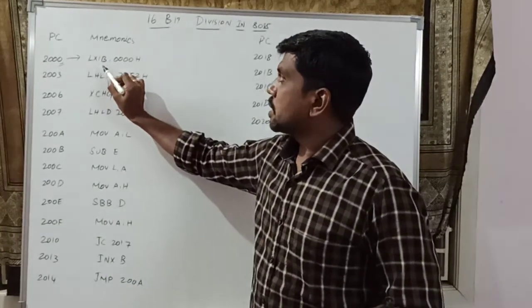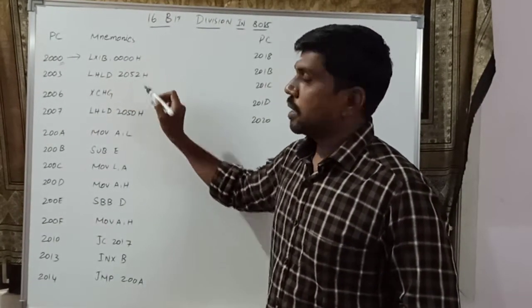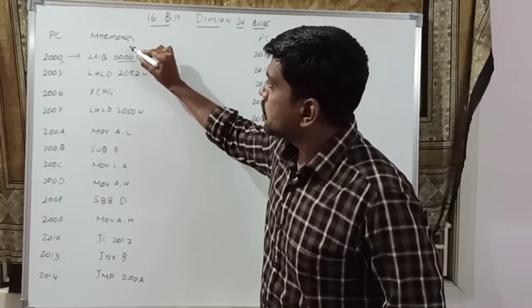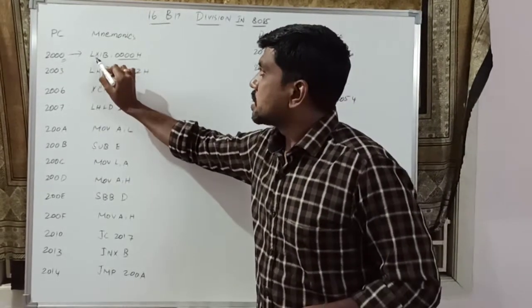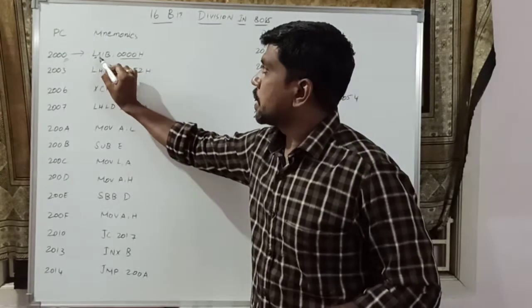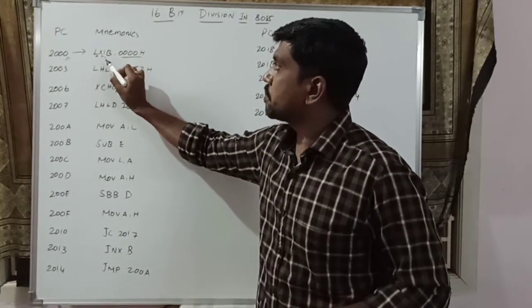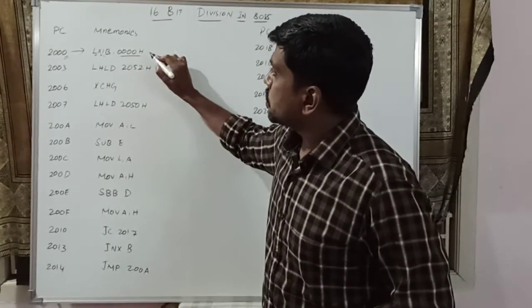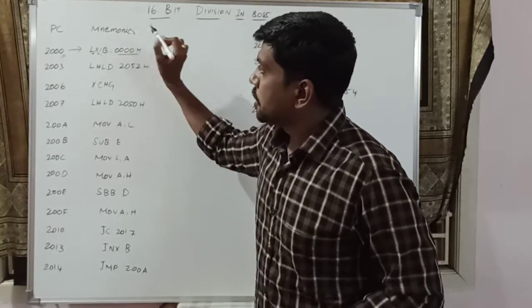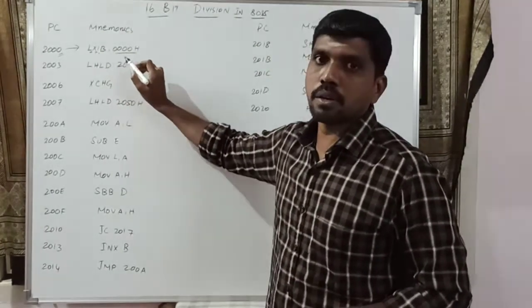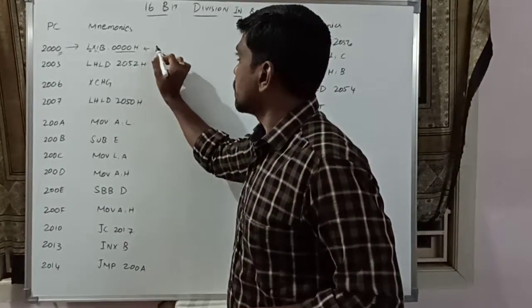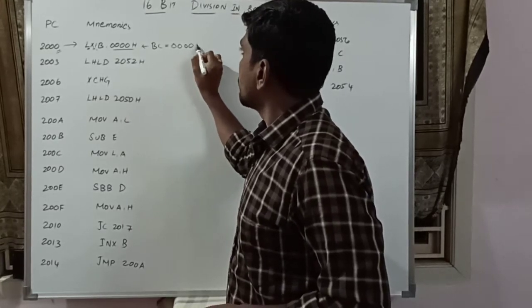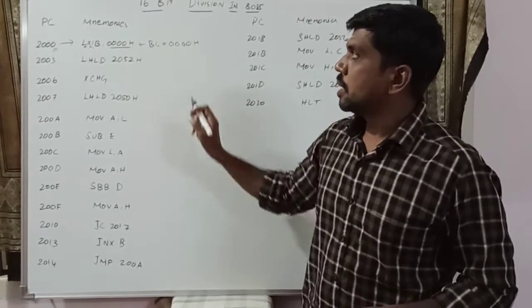This instruction represents LXI B, 0000H. So 0000H is a 16-bit value. This 16-bit value is transferred to the BC register pair. This instruction: L represents load function, X represents 16-bit value, I represents immediate value — so in the instruction itself, passing one 16-bit value. This 16-bit immediate value is transferred to BC pair. After execution of this instruction, BC pair value equals 0000H.